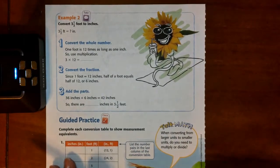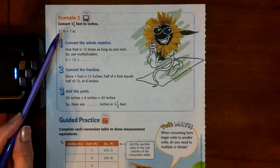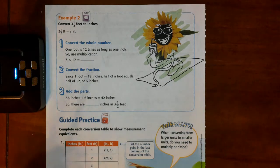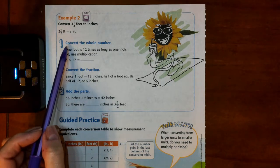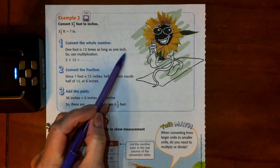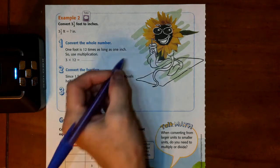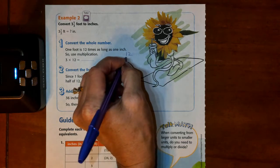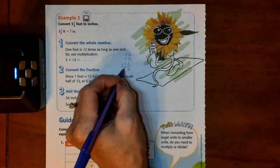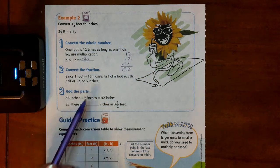Let's look at example number 2. We're going to convert 3.5 feet into inches. Step 1 tells us to convert the whole number. 1 foot is 12 times as long as 1 inch. So we're going to use multiplication again. 12 times 3 is the same as repeated addition. 2, 4, 6. 36. 12 times 3 is 36.